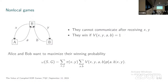In a non-local game, the players should be very far apart so they cannot communicate. The goal of the players is to maximize the winning probability. This is omega, where pi is the distribution — the probability of the referee sending X to Alice and Y to Bob. V is the verification function, and P is the probability of Alice and Bob getting X and Y and answering with A and B. Before the game, the players are allowed to agree on some strategy, and depending on the strategy, one gets this probability distribution.